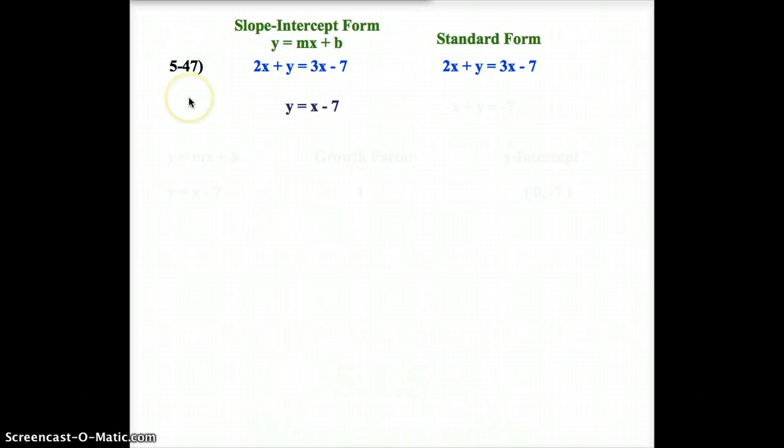To get them to slope-intercept form, for this one, I subtracted 2x from both sides. When I do 2x from this side, obviously they cancel, and 3x minus 2x is x. So now, on this side, I am in slope-intercept form. By the way, when I just have an x without a number there, what would the slope of that be? Hopefully, you're saying to yourself, it would be 1, because 1 times any number is just that number itself. So, the slope in this one would be 1.